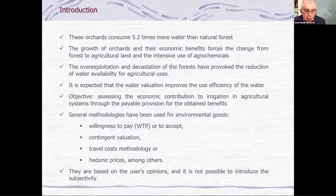A hectare of avocado contains about 156 trees and can consume 5.2 times more water than natural forest. The growth of orchards and their economic benefits forces the change from forest to agricultural land and the intensive use of agrochemicals. The exploitation and devastation of the forest has provoked the reduction of water availability for agricultural uses.